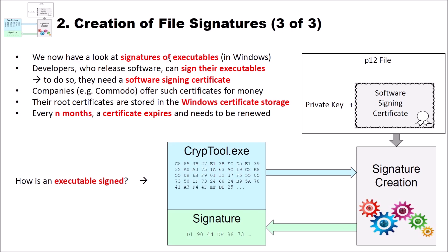Now let's have a look at signatures of executables in Windows. Developers who release software can sign their executables. To do so they need a so-called software signing certificate, and big companies like Comodo offer such certificates for money. When software is signed using such a certificate, it doesn't mean the software is good — it just means the one who created the software is actually the one who signed it, so a signed software doesn't stand for quality software. The root certificates from these companies are stored in the Windows certificate storage, and every N months a certificate expires and needs to be renewed. For example, in the CrypTool project we also have such a software signing certificate and have to renew it every N months.